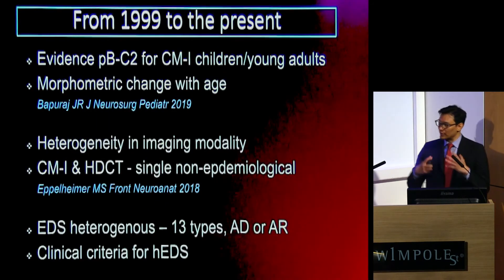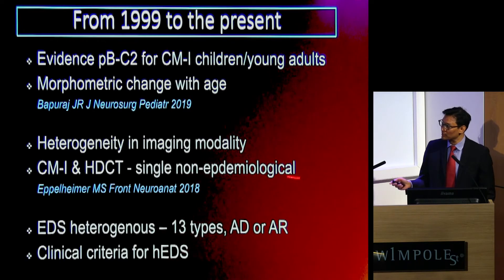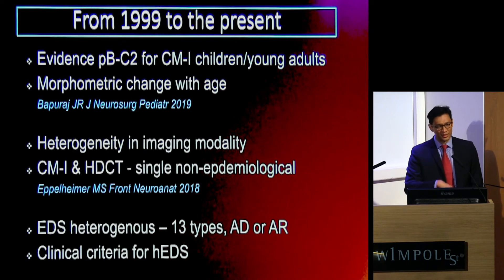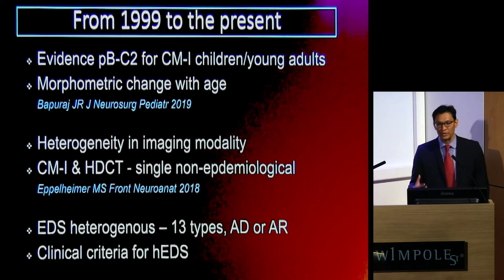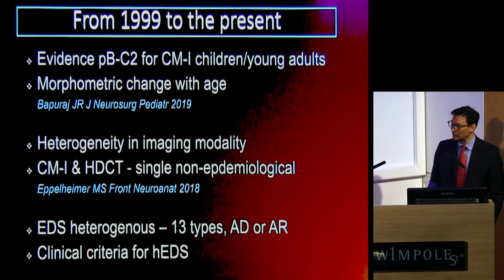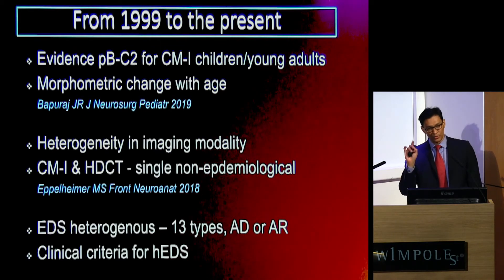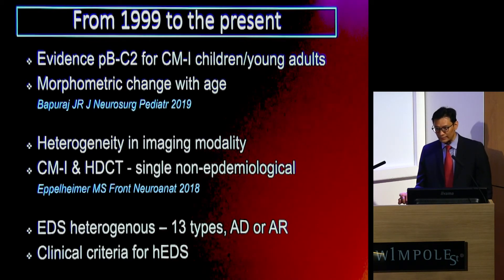Going through the historical literature to the present day, what we find is that the evidence for the use of the Grabb-Oaks measure is really in Chiari-1 malformation, in a select population predominantly in the paediatric age group and young adults. There was discussion about why patients would develop symptoms later in terms of cranial cervical instability, and more recent publications have dealt with morphometric changes in the cranial cervical junction that could contribute to that threshold change and clinical presentation towards adulthood. There is heterogeneity in the literature regarding which imaging modalities are used.